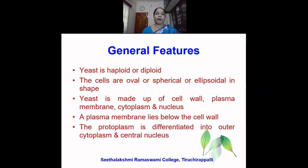Yeast is haploid or diploid — they may have a single set of chromosomes or they may have paired chromosomes. The cells may be oval, spherical, or ellipsoidal in nature. Yeast is made up of cell wall, plasma membrane, cytoplasm, and nucleus. Almost all the cell organelles are present in the yeast. A plasma membrane is present below the cell wall. The protoplasm is differentiated into outer cytoplasm and central nucleus.